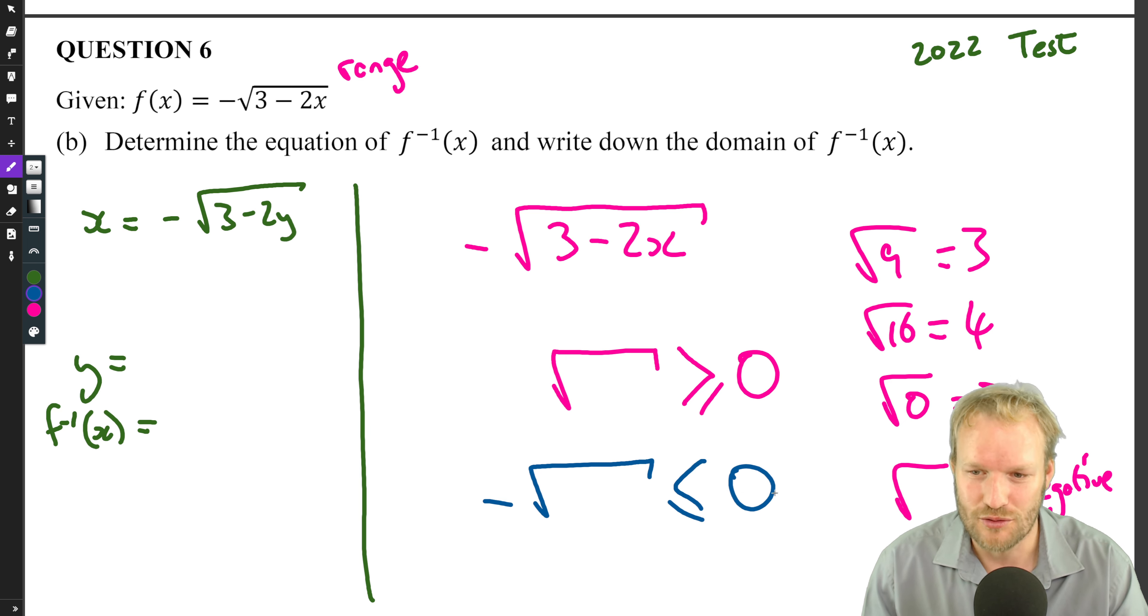Well if the square root of something is positive, then negative the square root of something must be negative or zero. So there we go, the thing underneath it happened to be three minus two x, but it doesn't really matter what it is because that square root is always going to be negative or zero.